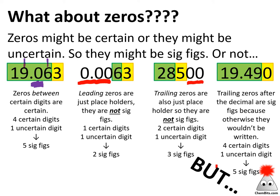Trailing zeros cause lots of problems, so we're going to talk about those quite a bit. Trailing zeros are placeholders, just like leading zeros — they're just holding the decimal place, so they're not significant. Unless that trailing zero is after the decimal place. In that case, that trailing zero is significant, because if it wasn't, we wouldn't put it there. If this really was 19.49, we would just write 19.49 — we wouldn't write 19.490. So trailing zeros after the decimal are significant.